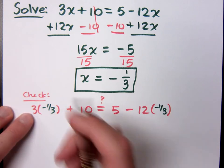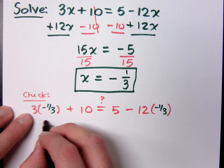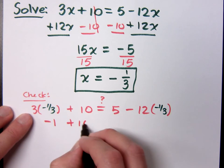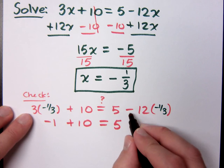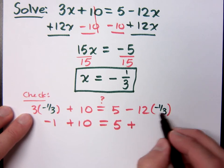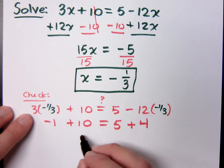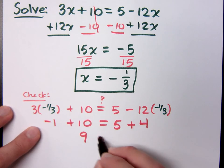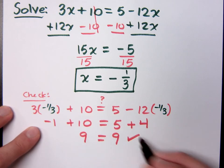What's 3 times negative one third? Negative one. So, negative one plus ten. Does this equal five? Negative times negative is positive. Four. Twelve over three is four. Nine does equal nine.